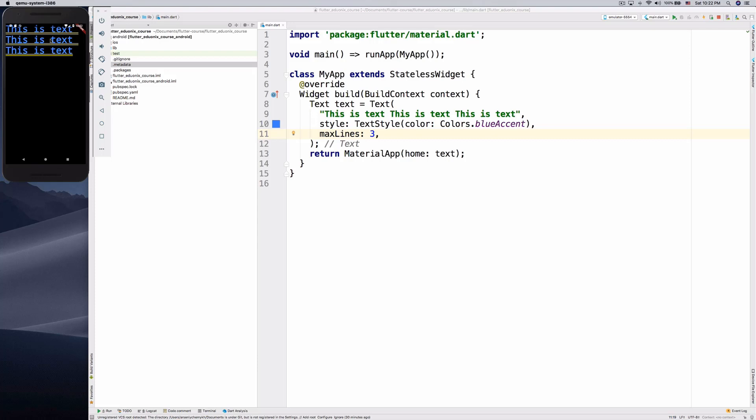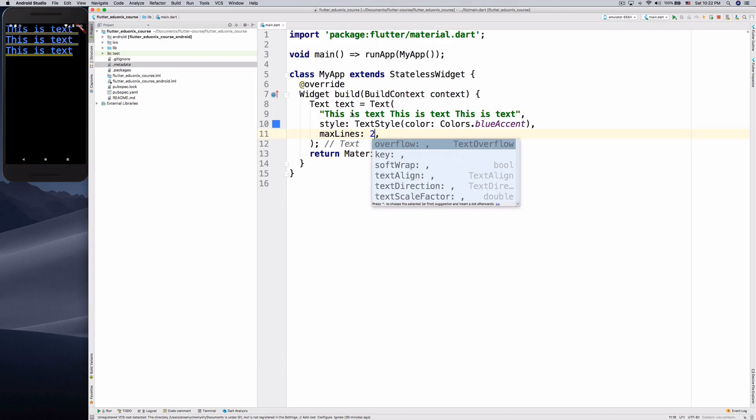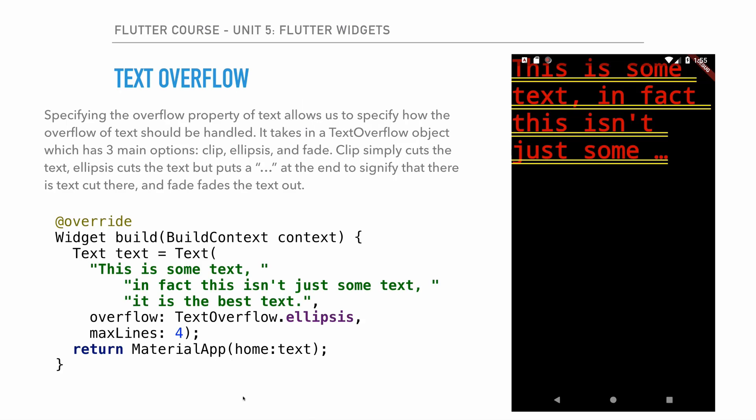What if we want to change the overflow strategy when maxLines is 2? We use the overflow property. The overflow property takes a TextOverflow object which has three main options: clip, ellipsis, and fade. Clip simply cuts the text. Ellipsis cuts the text but puts a '...' at the end to signify a cut. Fade fades the text out.